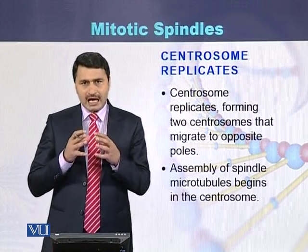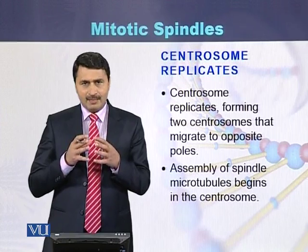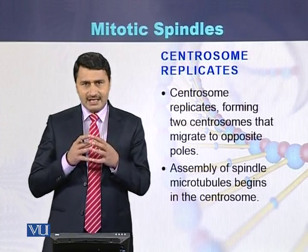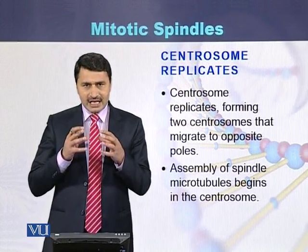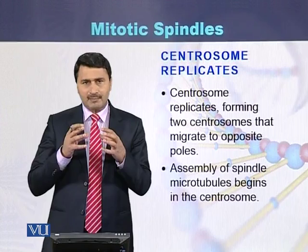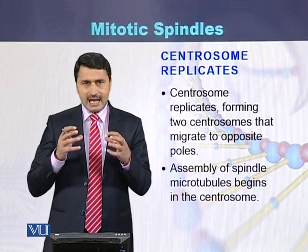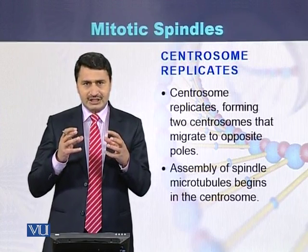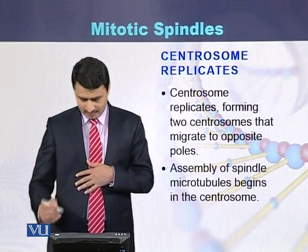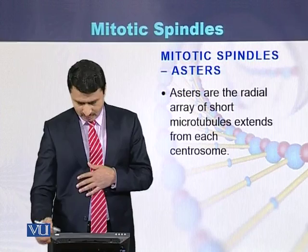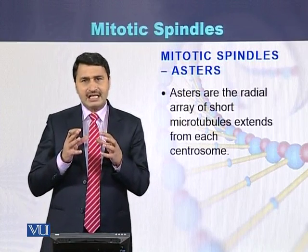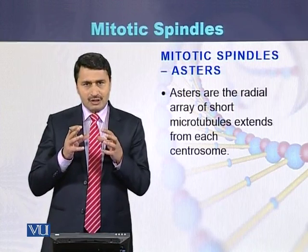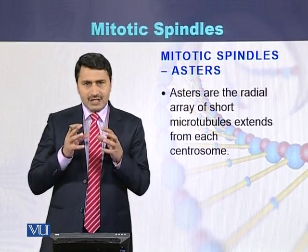Centrosomes are present within the cell. Before the cell divides, centrosomes divide into two and take position on the poles of the cell, emitting radiations called spindle fibers. Asters are the radial array which also emits from the centrosomes.